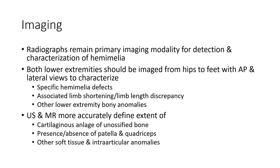Imaging: radiograph remains the primary imaging modality to detect and characterize hemimelia. Both lower extremities should be imaged from hip to hip with AP and lateral views. Specific hemimelia defects associated include limb shortening, limb length discrepancy, and lower extremity bony anomaly.